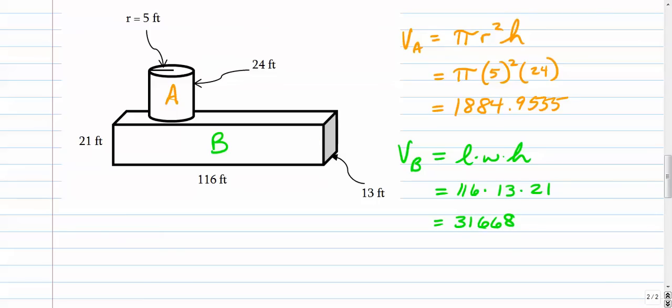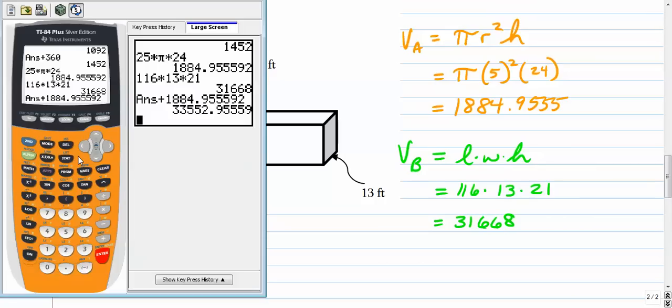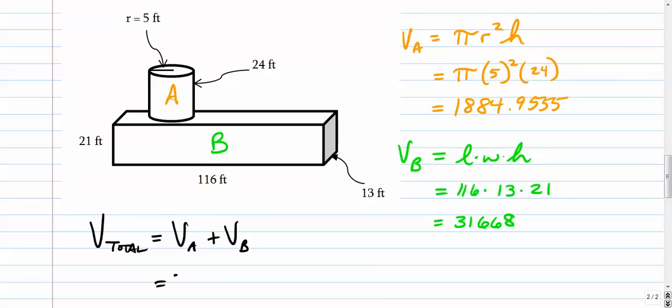And of course, to find the volume of the whole thing, volume of the whole thing is V sub A plus V sub B. So we have, let's see, add that to our previous answer. I'll just type that 1884, and I'll try to use as many decimals as possible. And that'll give us a pretty good answer there. 33,552. The whole volume is 33,552.956 cubic inches.